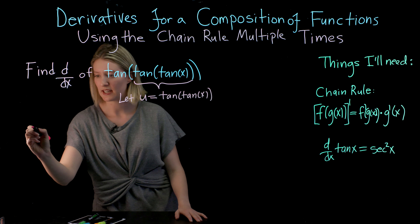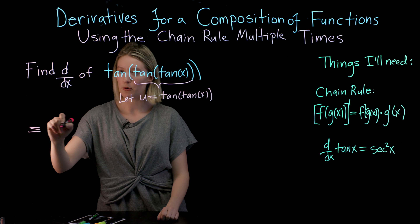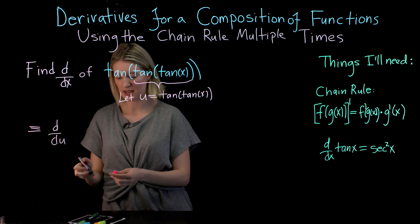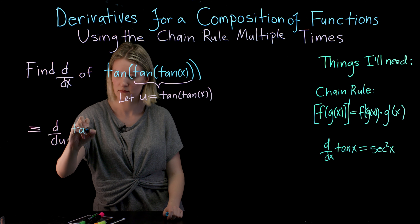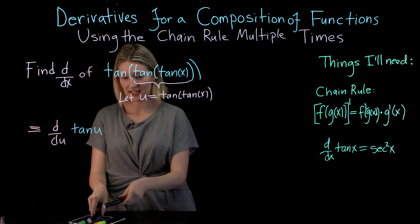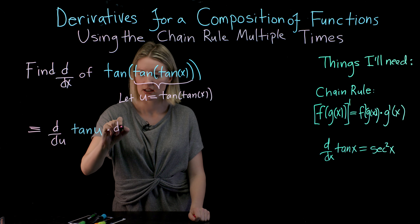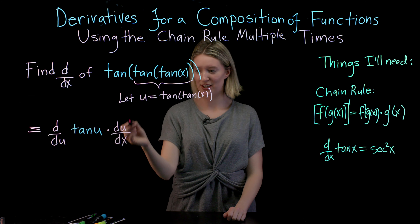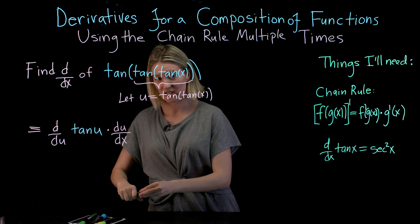That way, when I'm finding the derivative of this function, instead of writing d over dx, I'm going to write d over du of tangent of tangent of u, times the derivative of u with respect to x — that is, the derivative of the function tangent of tangent of x.